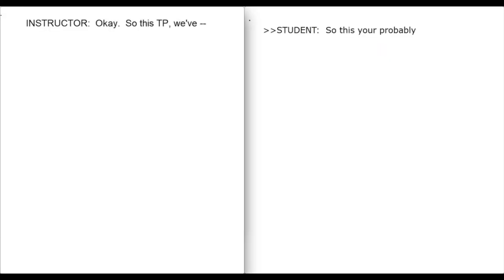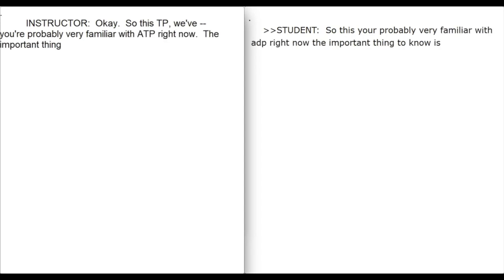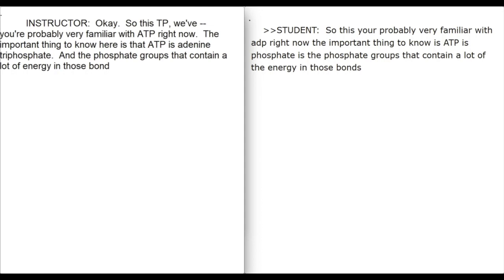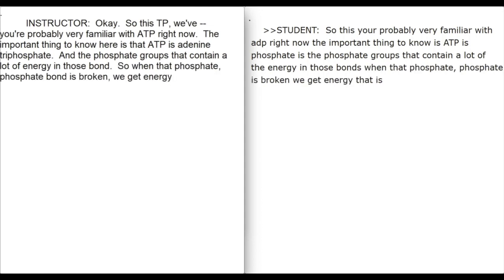This is ATP, you're probably very familiar with ATP right now. The important thing to know here is that ATP is adenine triphosphate, and the phosphate groups contain a lot of energy in those bonds. So when that phosphate-phosphate bond is broken, we get energy that is released.